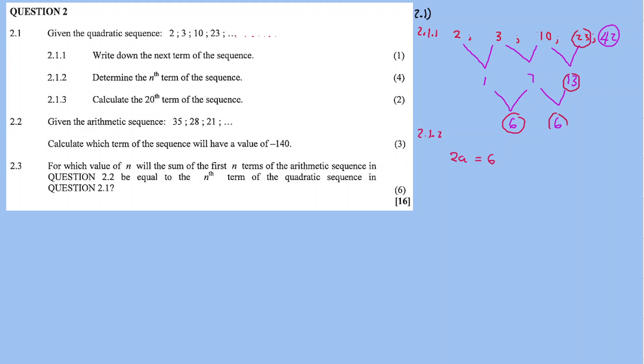Dividing both sides by 2 gives a = 3. Using the formula 3a + b = 1, substituting a = 3: 9 + b = 1, so b = 1 − 9 = −8.